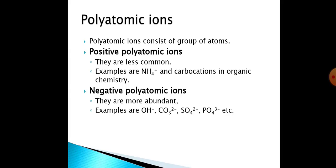Polyatomic ions consist of a group of atoms, and this group of atoms carries either a positive or negative charge. Positive charge carrying polyatomic species are less common; examples are the ammonium ion and carbocations. If a group of atoms carries a negative charge, it is known as a negative polyatomic ion — examples are the hydroxide ion and carbonate ion.